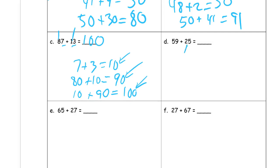All right. So we have 59 and 25. That 59 is almost a 60. So 59 plus 1 equals 60, and 60 plus 24 equals 84.